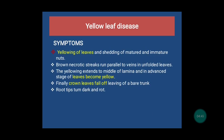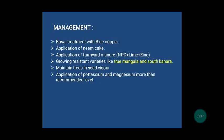The next disease is yellow leaf disease. The causal organism is phytoplasma. The symptoms are yellowing of leaves and shedding of mature and immature nuts. Brown necrotic streaks run parallel to the veins in unfolded leaves. The yellowing extends to the middle of the lamina and at last covers the full leaves. Finally, crown leaves fall off leaving only a bare trunk. Then root tips turn dark and rot occurs in the tree. The preventive measures include basal treatment with Blitox copper, applying neem cake, farmyard manure, growing resistant varieties like Thiruvengadam and South Kanara, and applying potassium and magnesium at the recommended level.